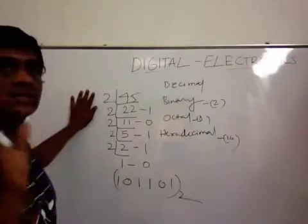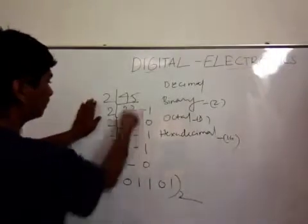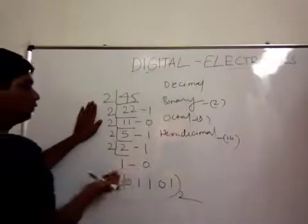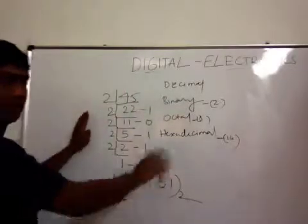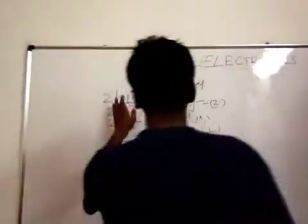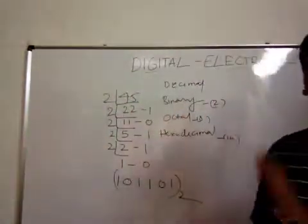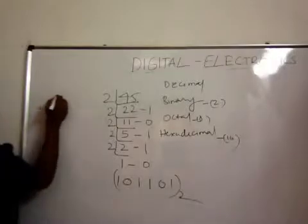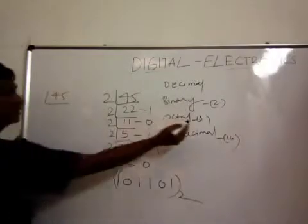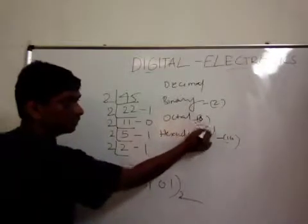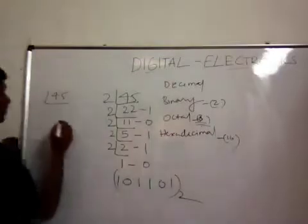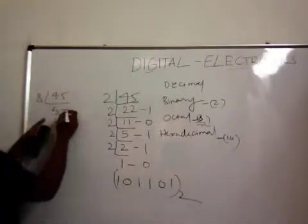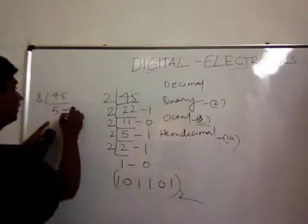It involves just simple division — you divide, write down the remainder, and go from bottom to top, then write the base. Let me convert the same 45 into octal form. The radix of octal is 8, so I divide 45 by 8. Eight 5s are 40, and my remainder is 5.